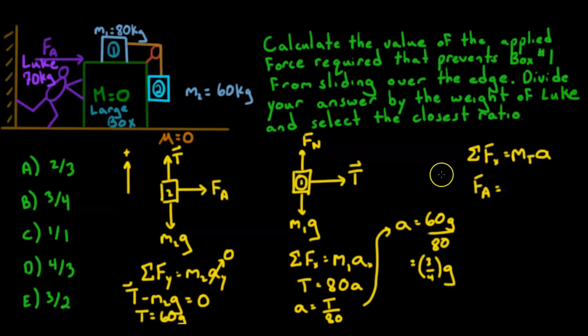So if we're going to look at the total mass of the whole system, our total mass would be 0 plus 80 plus 60, which is 140 kilograms, times by acceleration, which we know is 3 quarters g. And that's going to reduce to 105 times the gravitational field strength. So that's our applied force.